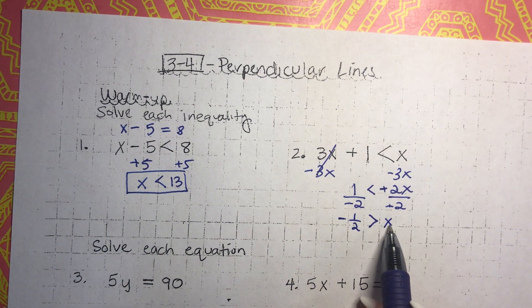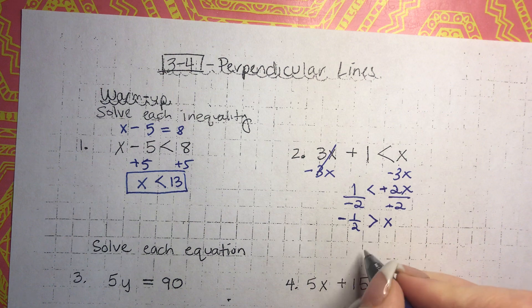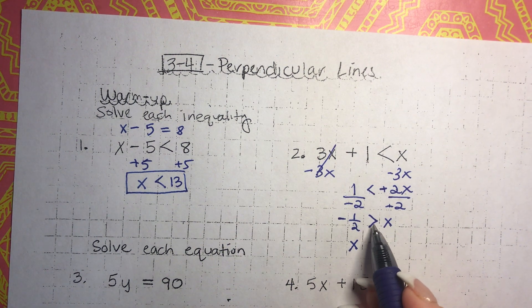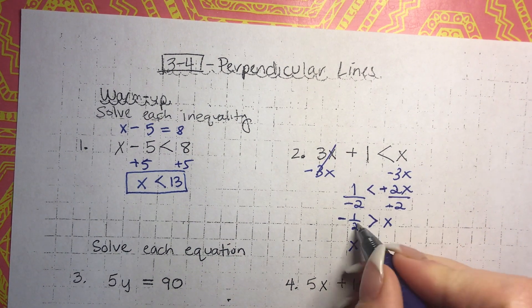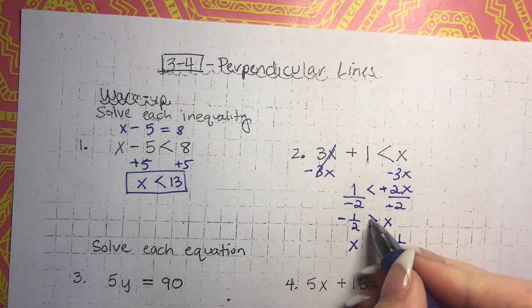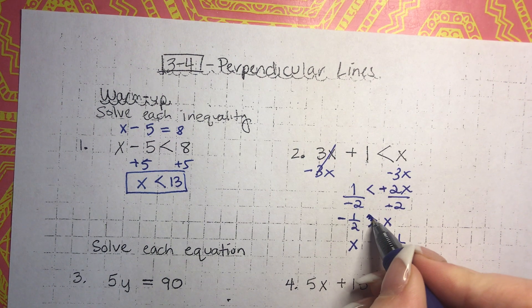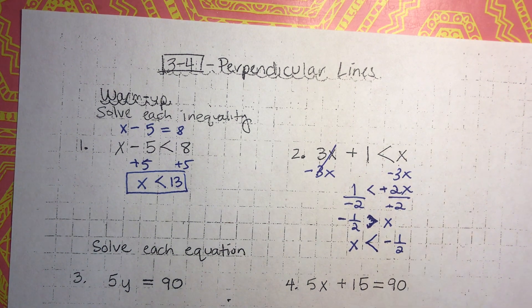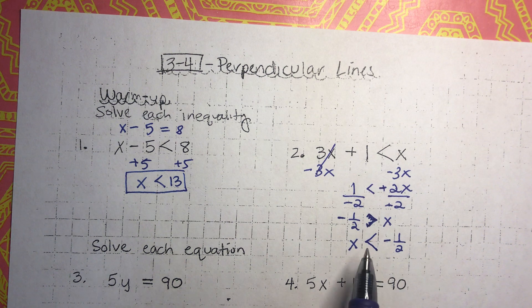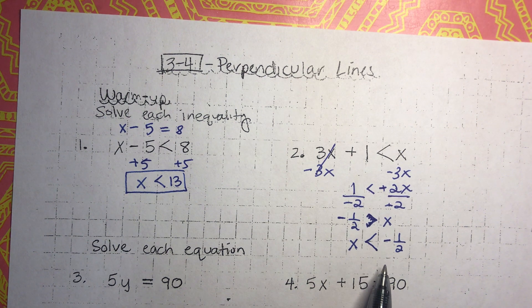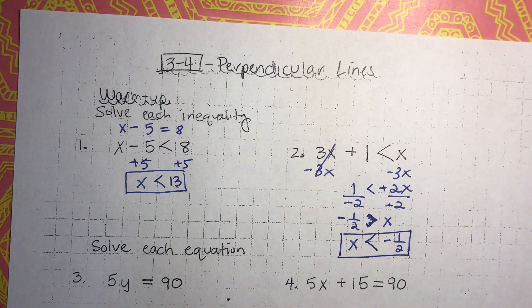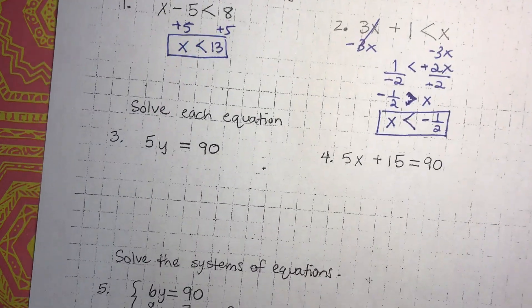When you multiply or divide by a negative number, you have to flip that sign. Negative and a negative are positive. 2 divided by 2 is 1, 1 times x is x, and we're left with negative 1 half. Whenever you're dealing with inequalities, make sure the variable is on the left side, so I'm going to switch it over. Make sure the sign is the same — so the answer is x is less than negative 1 half. If you got that one right, awesome job.